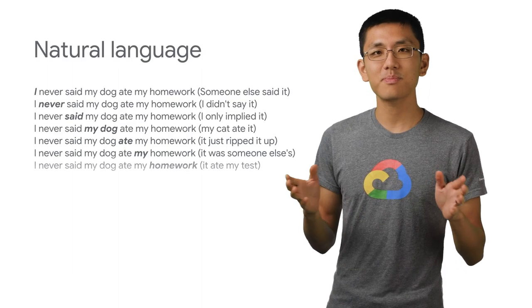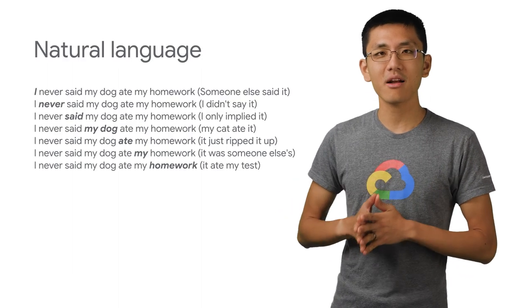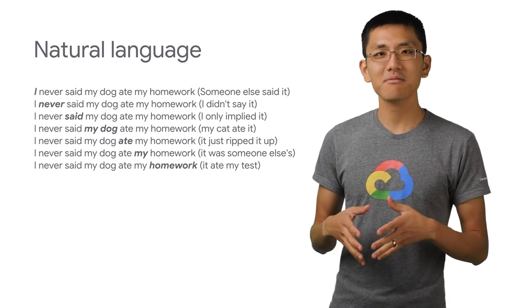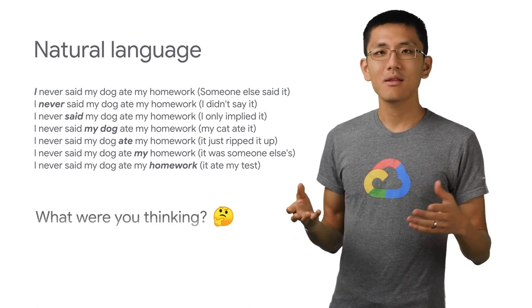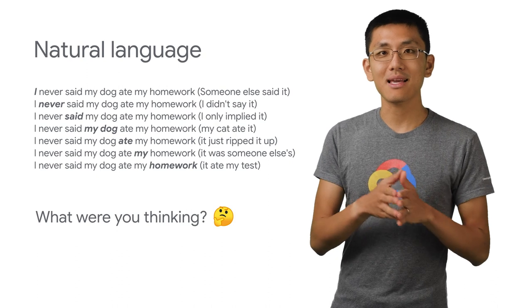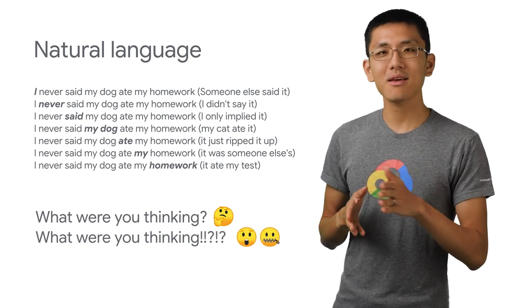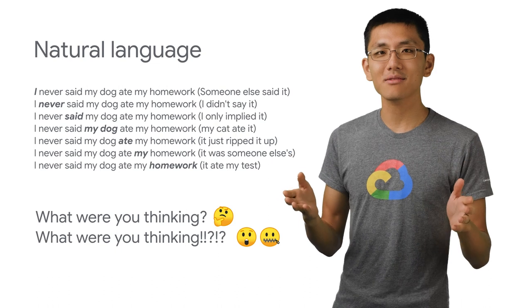Natural language is special because it has structure inherent in the language, while at the same time being very freeform. There are many ways you can say the same thing, and you can also say very similar words and yet mean very different things.